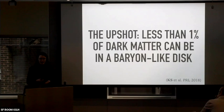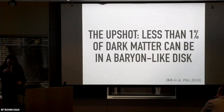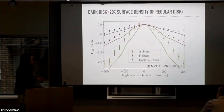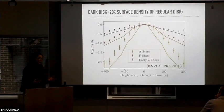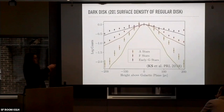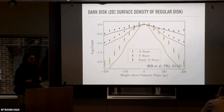A follow-up question asks why different tracer populations have different vertical scale heights. My understanding is that it's a couple of factors: G stars are older and inherited the kinematical properties of the gas out of which they were born, when the gas was a little bit thicker and hadn't cooled to present-day levels. Additionally, some of these stars were not necessarily born at the solar galactocentric radius — some have migrated from other radii, which also tends to puff things up. That's something people are still trying to get a better handle on.